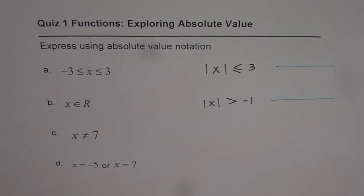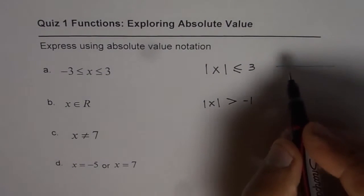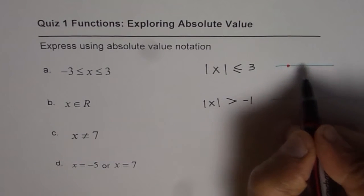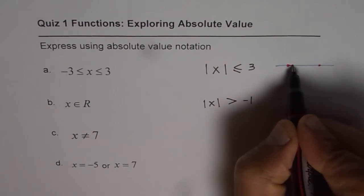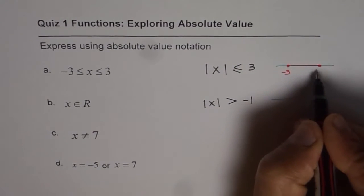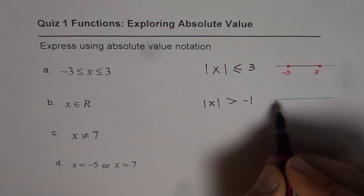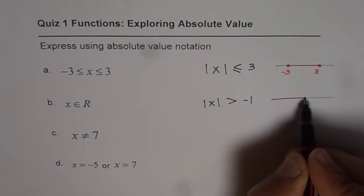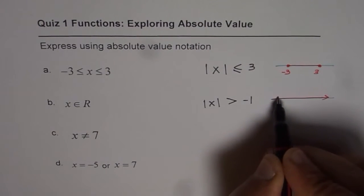In the first case, we are looking for values between minus 3 and 3, both included. In the second case, we are looking for all the values of x, no restrictions at all.